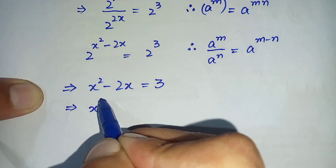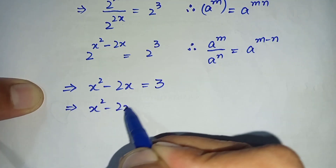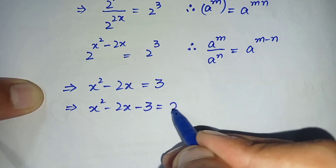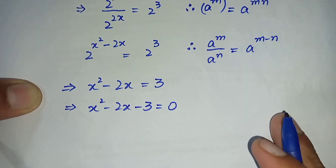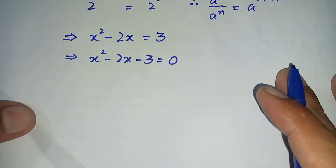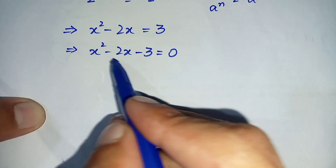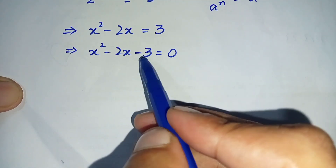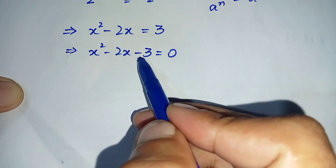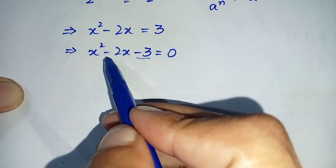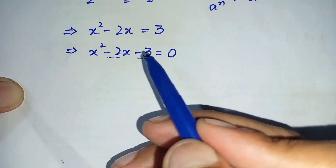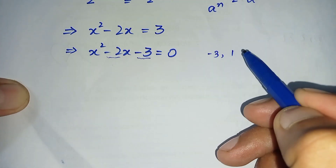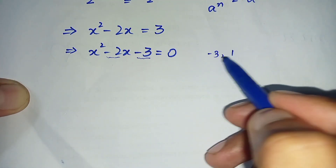Now we will shift this 3 to the left hand side, so it will become: x squared minus 2x minus 3 is equal to 0. It is a quadratic equation. Now we will simplify this using the factorization method. We will find two numbers whose product is minus 3 and whose sum is minus 2.